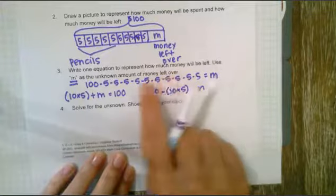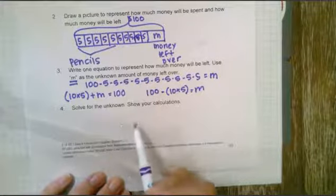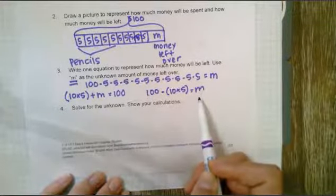All three of these equations are correct. And then obviously you'll solve for the unknown. So you'll solve for what m represents in this situation.